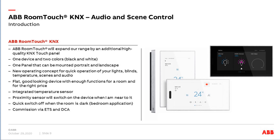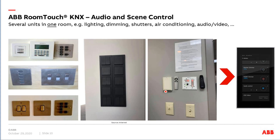Commissioning is done via the ETS using the so-called DCA app. Here you can see pictures of a typical room with several operating elements — for example on the right side for light, in the middle for the air conditioning system, and here for the shutter. Or conventional push buttons for operation. In a typical meeting room you have control units for light, audio, shutter, and a description of how to operate all these different functions.